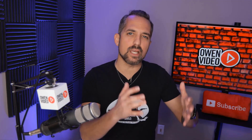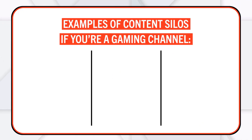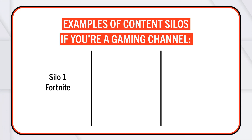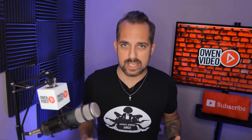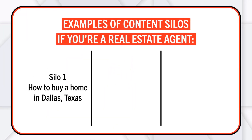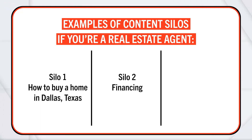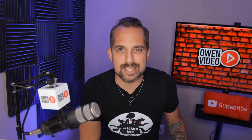Here are a few examples of how you could be building a content silo strategy. If you're a gaming channel and most of your videos are on Fortnite, that is one silo — and you want to have multiple videos each on Fortnite. You also want to create a second silo on Minecraft, and maybe a third on Roblox. If you're a real estate channel making videos on how to buy a home in Dallas, Texas, that's one silo. You'd probably want a second silo covering financing, and maybe a third covering the hot spots in Dallas, Texas.